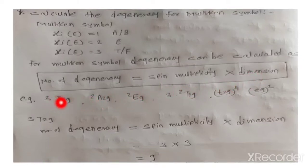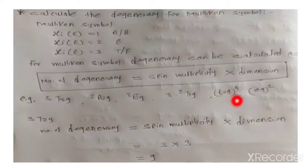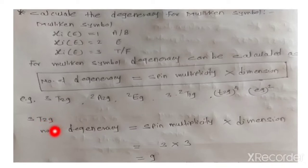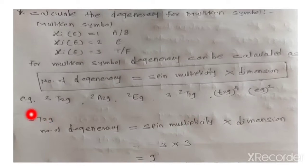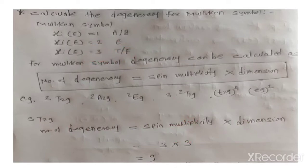For example, taking ³T2g as the Mulliken symbol: the degeneracy equals spin multiplicity times dimension. The spin multiplicity here is 3, and the symbol is T, which means dimension equals 3. Therefore, degeneracy equals 3 times 3, which gives us 9.